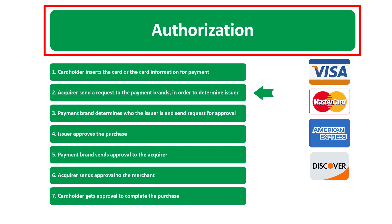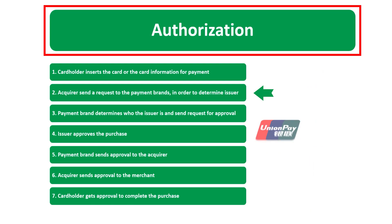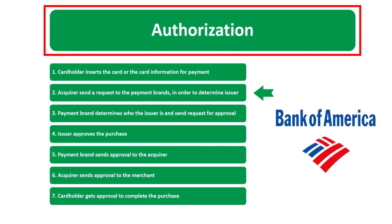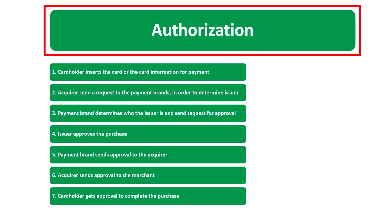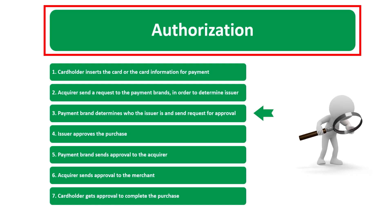American Express, Discover, JCB International, or UnionPay — in order to determine the issuer. The issuer is the entity that gave you that particular card. Let's say for example your issuer is Bank of America. Bank of America is your issuer.